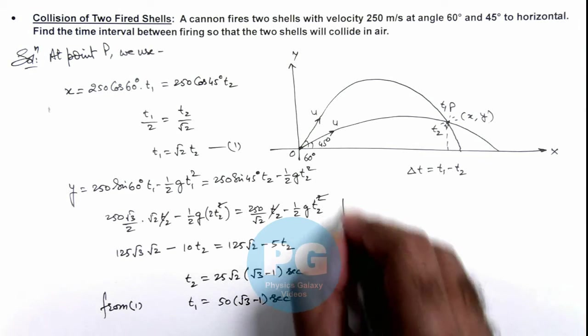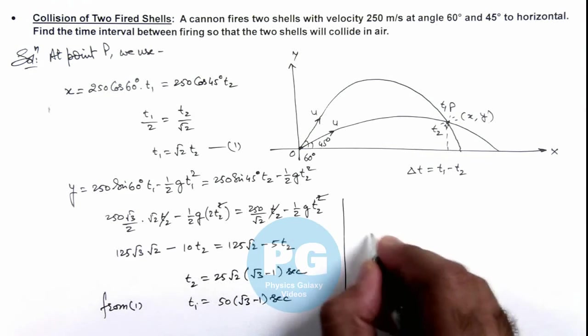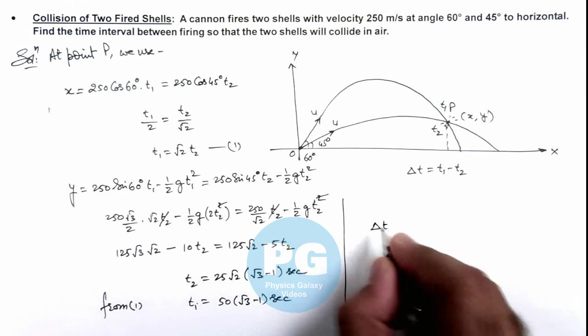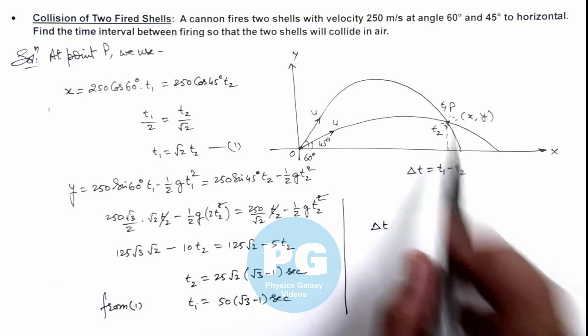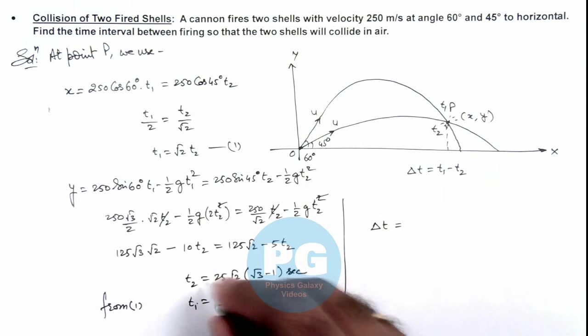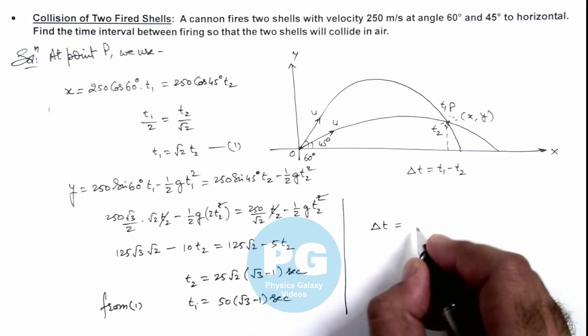So as we have got the values of t₂ and t₁, we can find out the time difference between the firing of these two shells so that they will collide in mid air. This can be written as t₁ - t₂.